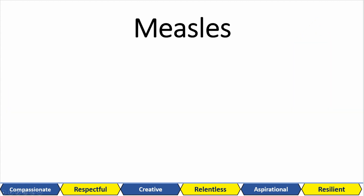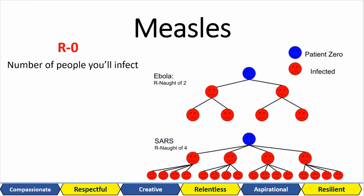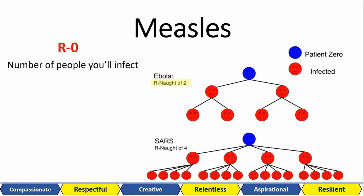The first viral disease we're going to look at is measles, which is super contagious. Let's show this by talking about a measurement called the R0 — in simple terms, this is the number of people an infected person is expected to infect. Ebola has an R0 of 2, so each infected person passes it on to roughly 2 people, who then pass it on to 2 others. SARS has an R0 of 4, so within 2 cycles you have 16 people infected.